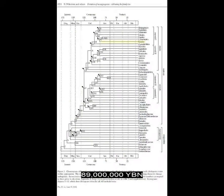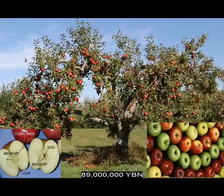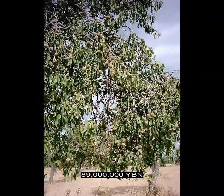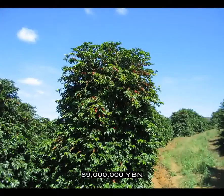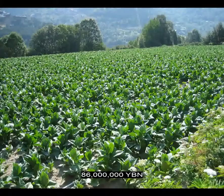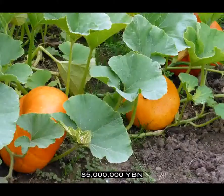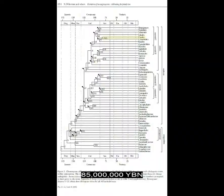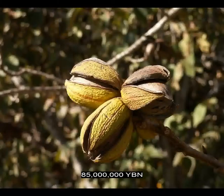Flowers Rosales — hemp, hop, jackfruit, fig, strawberry, rose, raspberry, apple, pear, plum, cherry, peach, almond. Flowers Gentianales evolve — oleander, coffee. Flowers Solanales evolve — bell pepper, tomato, tobacco, potato, eggplant. Flowers Cucurbitales evolve — melon, cucumber, pumpkin, squash, zucchini. Flowers Fagales — birch, hazel, chestnut, beech, oak, walnut, pecan, hickory.